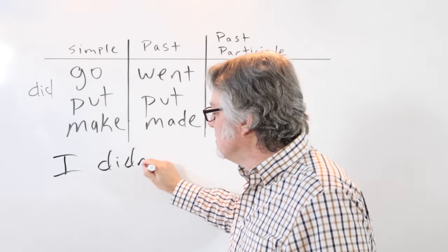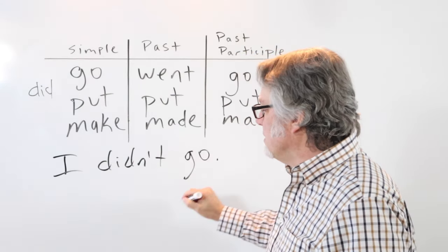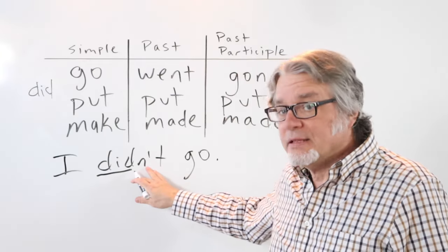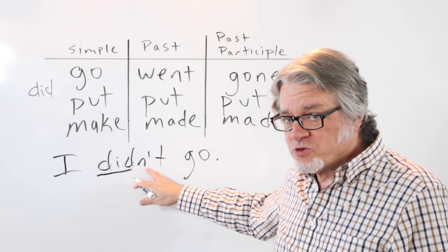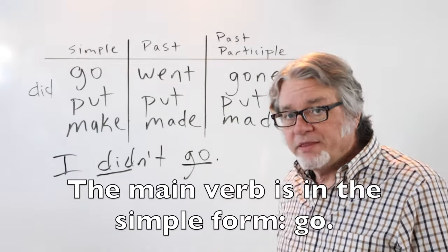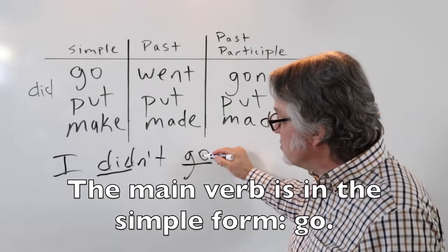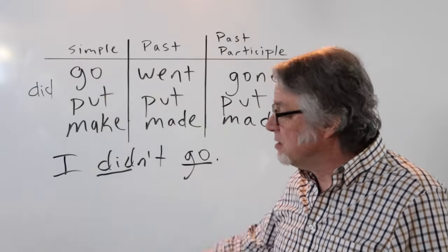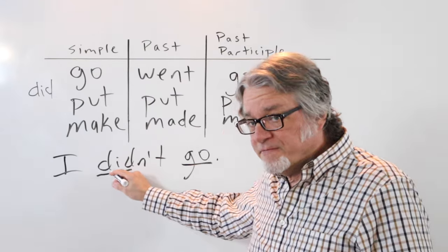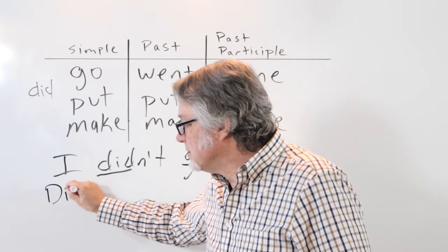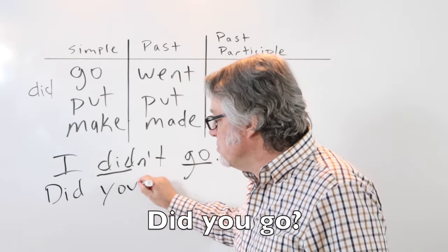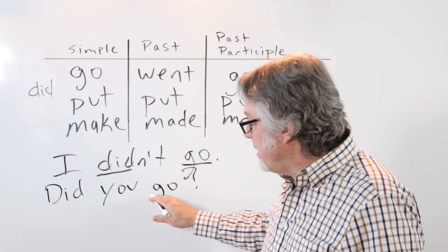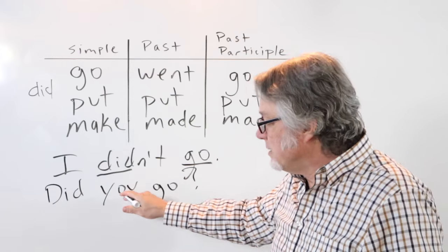I didn't go. This is negative, using the helping verb and 'not' in the form of a contraction, and then the main verb is in the simple form: 'go.' To make a question, put 'did' first: Did you go? Here's the helping verb, here's the subject, and here's the main verb.